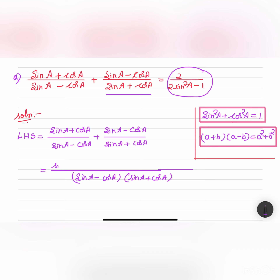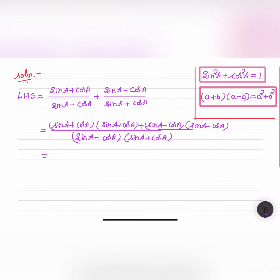In the numerator: (sin A + cos A)(sin A + cos A) + (sin A - cos A)(sin A - cos A), which is (sin A + cos A)² + (sin A - cos A)².